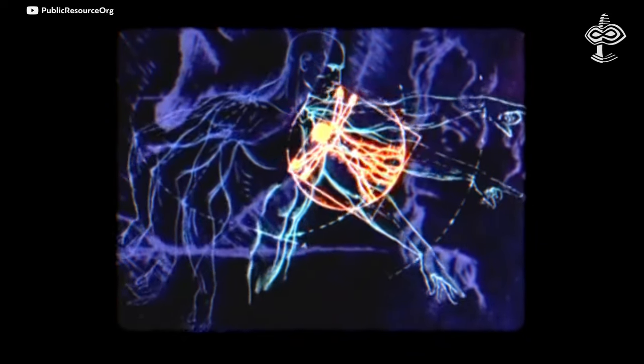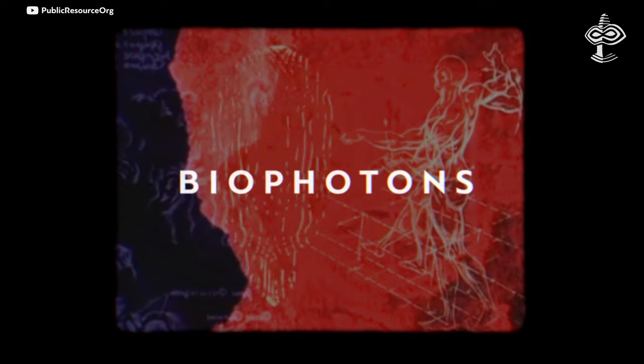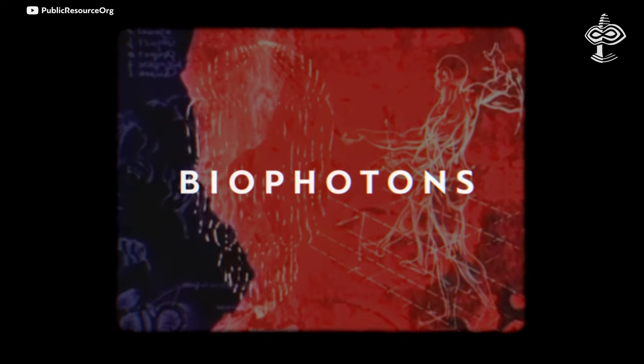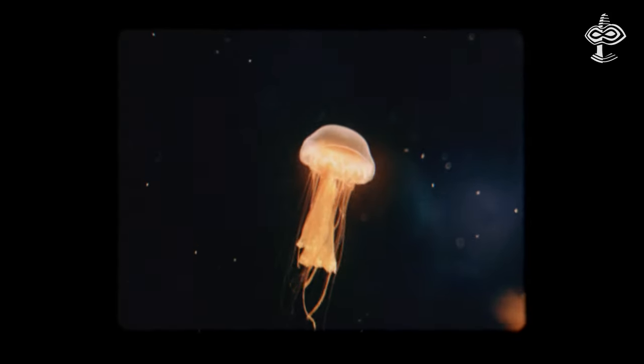All living things, including humans, emit a type of light that is not easily detectable. This light is called biophotons, which are particles of light known as photons spontaneously emitted by living tissues.